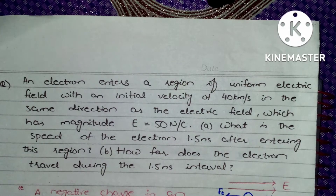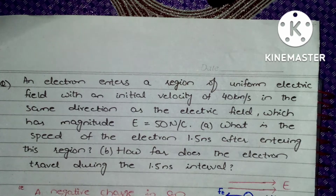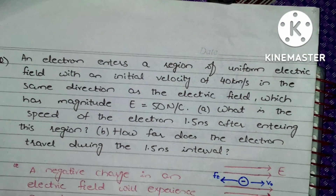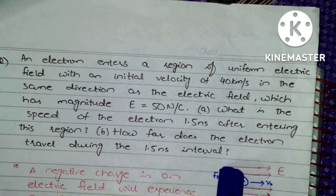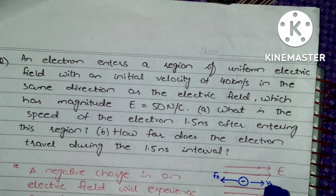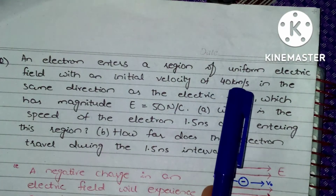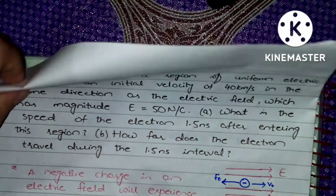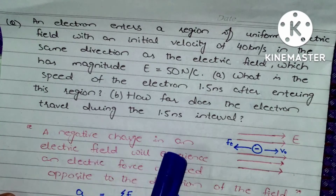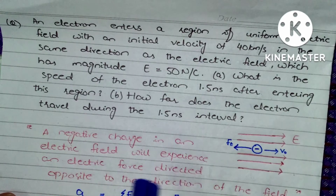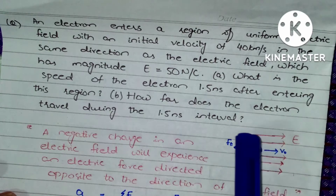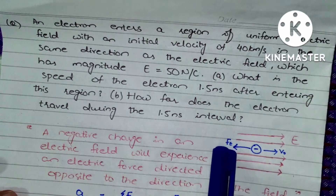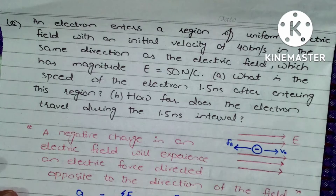Please pause the video and read the question yourself. If we draw the situation given to us in the question, we get something like this: an electron entering a uniform electric field with initial velocity V₀, which is given as 40 km/s. The key to this question is that a negative charge in an electric field will experience an electric force directed opposite to the direction of the field. So this electron will experience a force towards this side — let's call that force Fe.